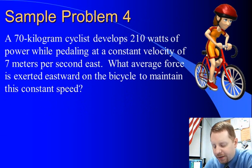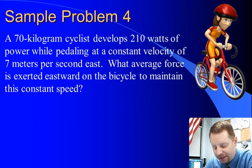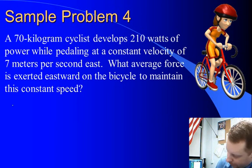Here we have a 70 kilogram cyclist developing 210 watts of power while pedaling at a constant velocity of 7 meters per second east. What average force is exerted eastward on the bicycle to maintain this constant speed? Well, here again...